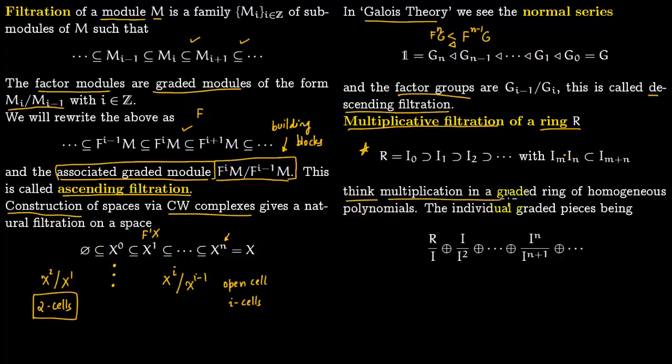This is a standard example. You can think of multiplication in a graded ring of homogeneous polynomials. You take a degree 2 polynomial, multiply it to a degree 3 polynomial, both homogeneous, and you land up in degree 5. The individual graded pieces you can think of like this: R over I, I over I^2, and so on.